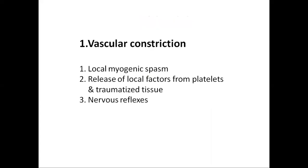The first step in hemostasis is vascular constriction. It consists of three processes: local myogenic spasm, release of local factors from the platelets and the damaged tissues, and the nervous reflex. Whenever there is damage to the blood vessels or any trauma, signals are sent to the smooth muscles of the vessels, which in turn causes vasoconstriction of the vessel.